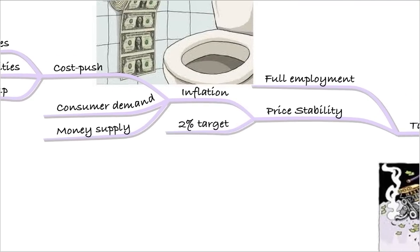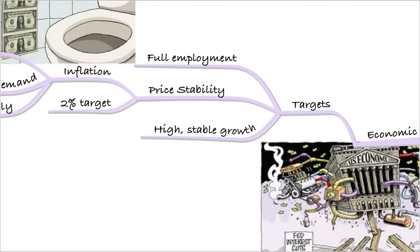In the UK, there is a 2% target, so monetary policy makers are targeting 2% as a stable level of inflation. The third target is high, stable growth in the economy. They don't want the economy going from boom to bust — getting overheated and then slowing down very rapidly. They want high growth but want to maintain it.